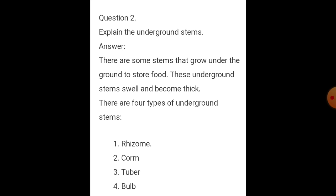Question number two: explain the underground stems. Some stems grow under the ground to store food. These underground stems swell and become thick. There are four types of underground stems: rhizome, corm, tuber, and bulb.